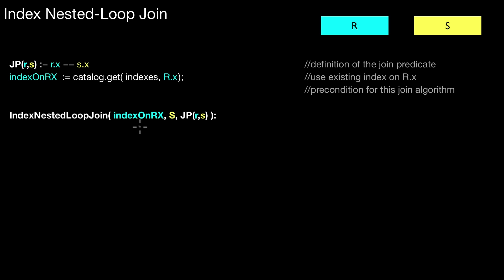So I have a function call that returns me that index. And now this handle points to this index. So this is an index on attribute R.x. And that is the precondition for this join algorithm. Such an index has to be available. So now I can call the join algorithm. And that's what I do here.